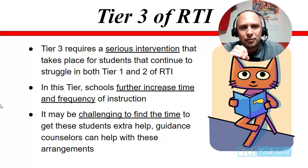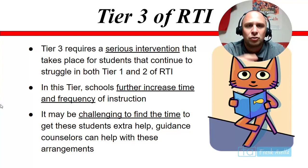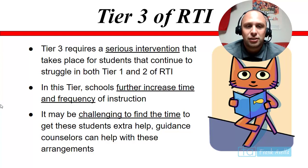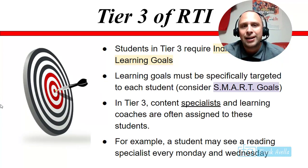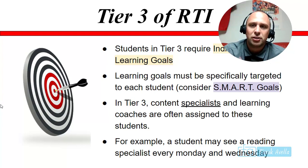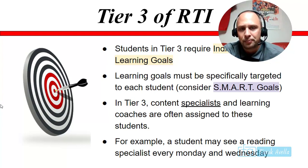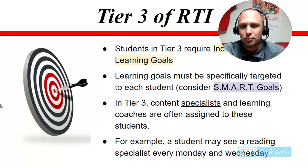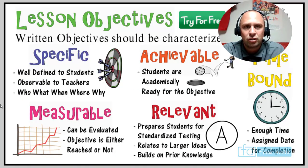Tier three requires a serious intervention for students who continue to struggle in both tier one and tier two. Schools further increase the time and frequency of instruction, though it may be challenging to find that time. Guidance counselors often help with scheduling arrangements. Students in tier three require individualized learning goals that should be SMART — specific, measurable, achievable, relevant, and timely. Content specialists and learning coaches are often assigned specifically to those students; for example, a student may see a reading specialist every Monday and Wednesday.